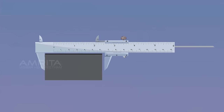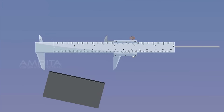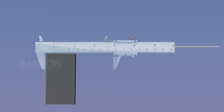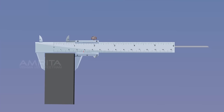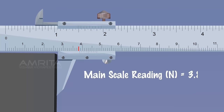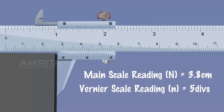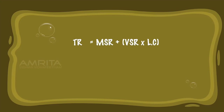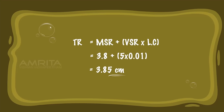Now place the rectangular block breadthwise in between the outer measuring jaws of the vernier calipers and note the MSR and VSR readings. Calculation: TR = MSR + (VSR × least count) = 3.8 + (5 × 0.01) = 3.85 cm, so B = 3.85 cm.